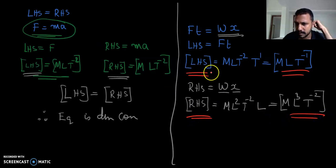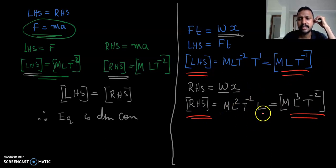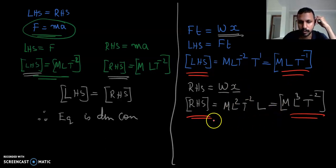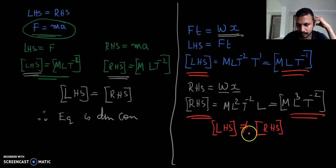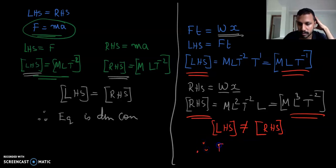Comparing the dimensional formula of LHS and the dimensional formula of RHS — are they the same? No, they are not the same. The dimensional formula of LHS is not equal to the dimensional formula of RHS. Therefore, we could conclude the equation is wrong.